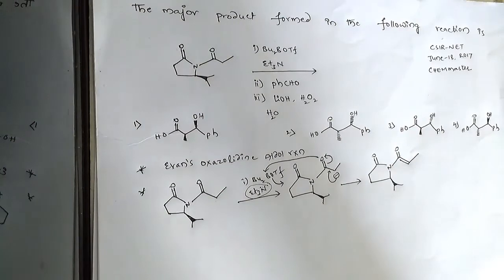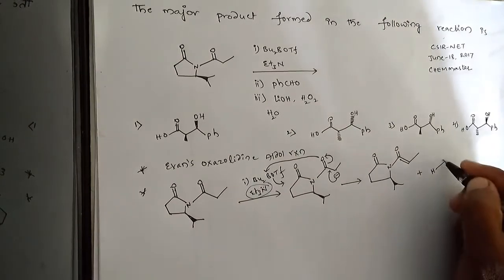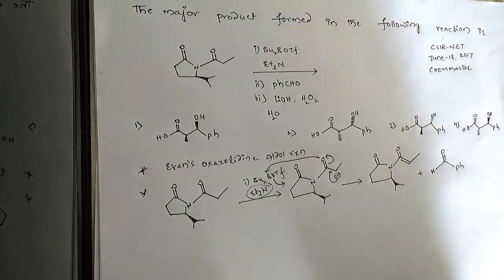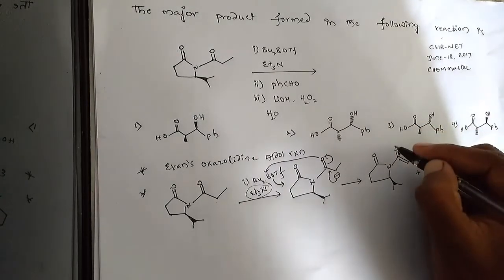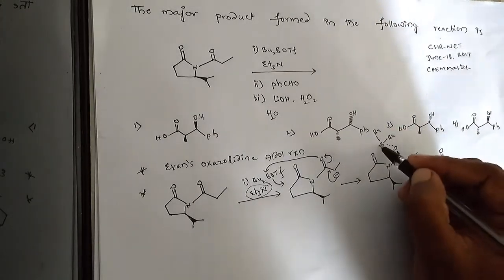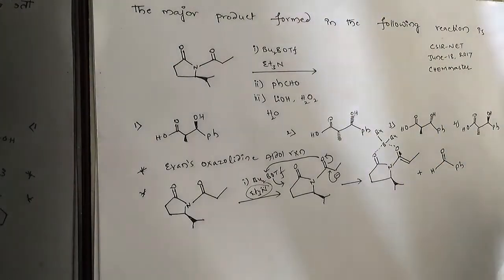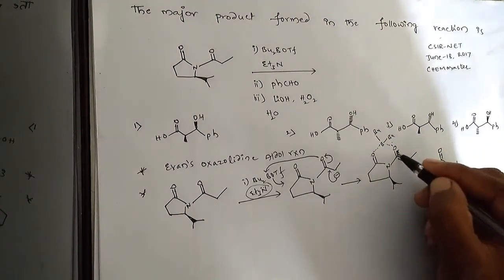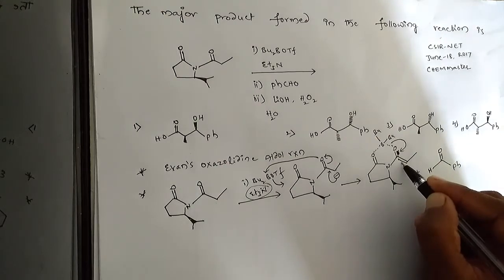So this is the intermediate compound. It further reacts with dibutylboron. The boron chelates the two oxygens, and then this bond rearranges — the double bond connects onto this carbonyl carbon.